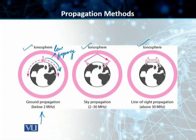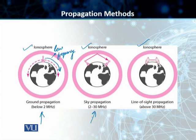The distance these signals can travel depends on the power of the signal — the greater the power, the greater the distance. In the case of sky propagation, we have slightly higher frequencies: 2 to 30 megahertz. The signals are high frequency radio waves transmitted upwards; they hit the ionosphere, which is the layer of atmosphere where ions exist. These signals hit those ions and are reflected back onto the earth, allowing for greater distances to be covered using sky propagation.